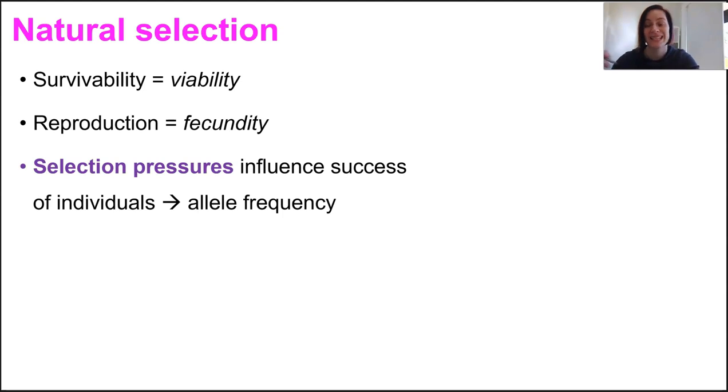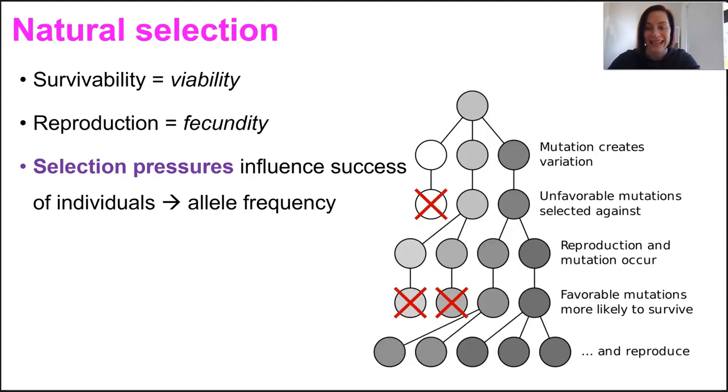And a selection pressure is a factor that influences the survival and the reproductive success of the individual in a population, and these influence the allele frequencies. So the selection pressure might be resource availability, environmental conditions, pathogens, or another organism interaction like predation.